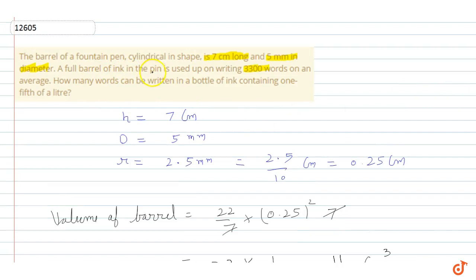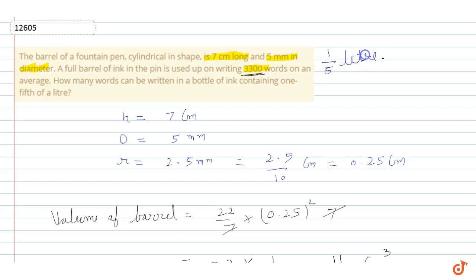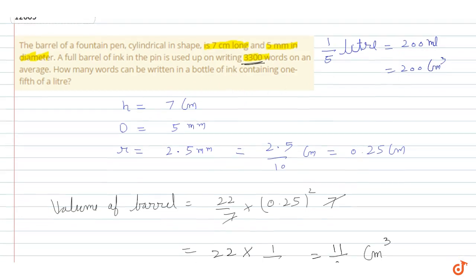It is given that a full barrel of ink is used to write 3300 words. So how many words can be written with a bottle of ink containing 1/5 of a liter? Now, 1/5 liter converted to cm³ or ml: 1/5 liter equals 200 ml, and since 1 ml equals 1 cm³, that gives us 200 cm³.